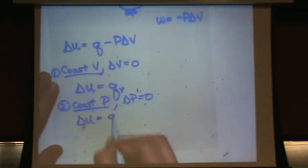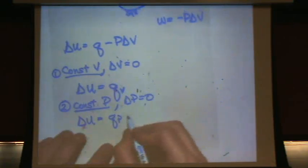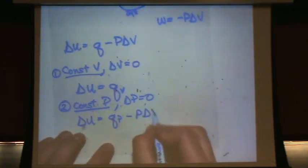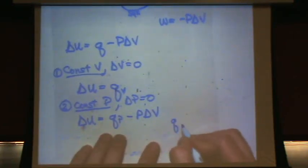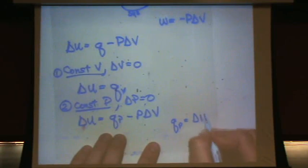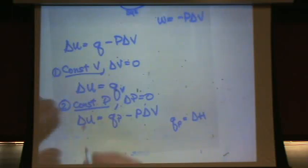So now delta U equals, now we'll just call this QP to remind ourselves it's heat flow at constant pressure. And nothing's going to happen to the work term. We make the following. This is pure definition. QP is defined as delta H. Pure definition, that's it.